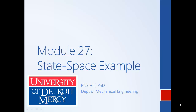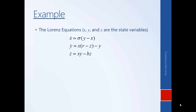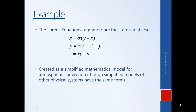We'll now go through an interesting state space example to illustrate the advantages of using a state space modeling formalism. These three equations constitute a state space representation of a physical system. They're called the Lorenz equations, originally generated as a simplified mathematical model for atmospheric convection, but other physical systems have simplified models of the same form. X, Y, and Z are the state variables, and Sigma, R, and B are constants representing physical parameters.